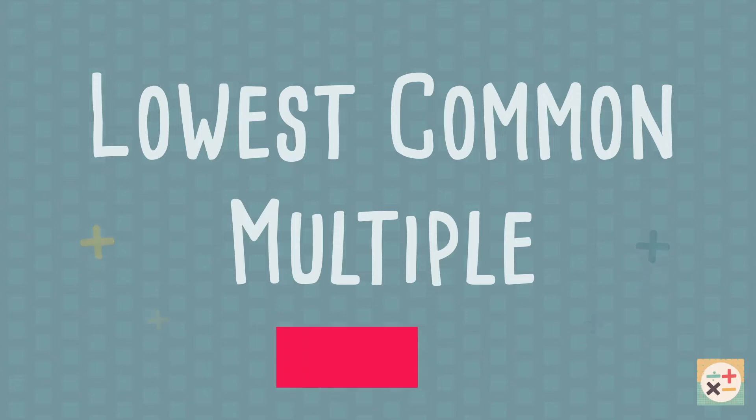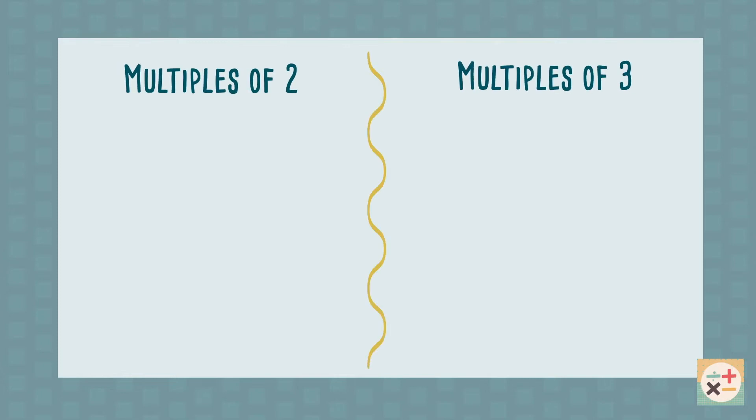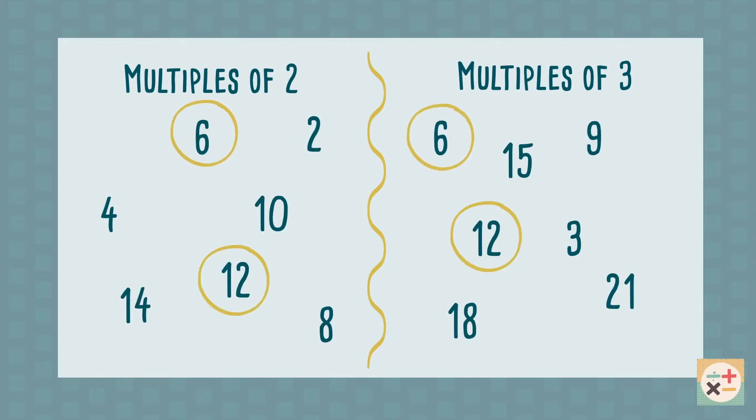For a refresher on what a multiple is, watch our video linked above or in the description below. What is a common multiple? A common multiple of two or more numbers is a number that is a multiple of all of those numbers.